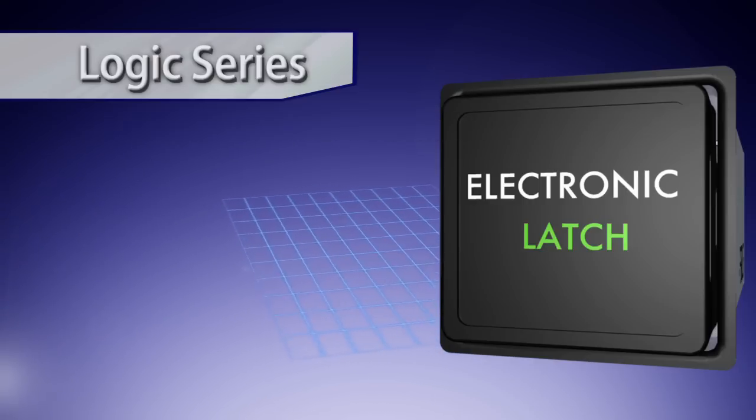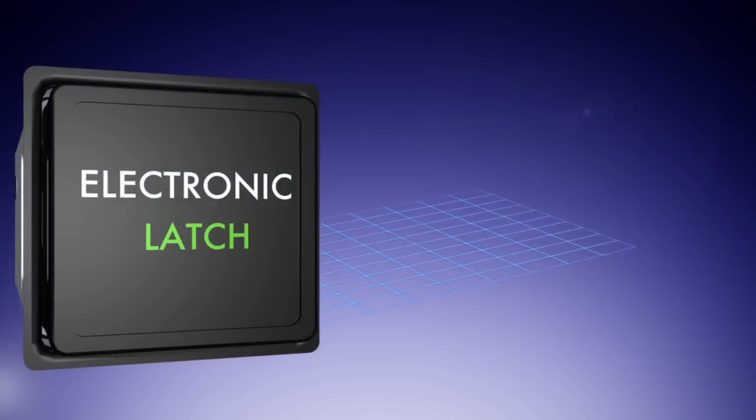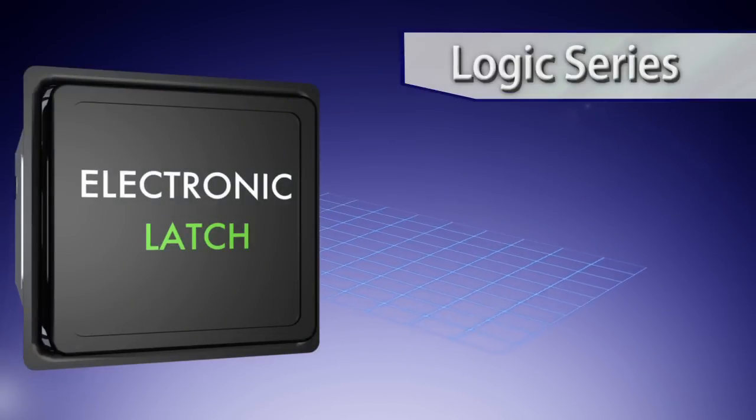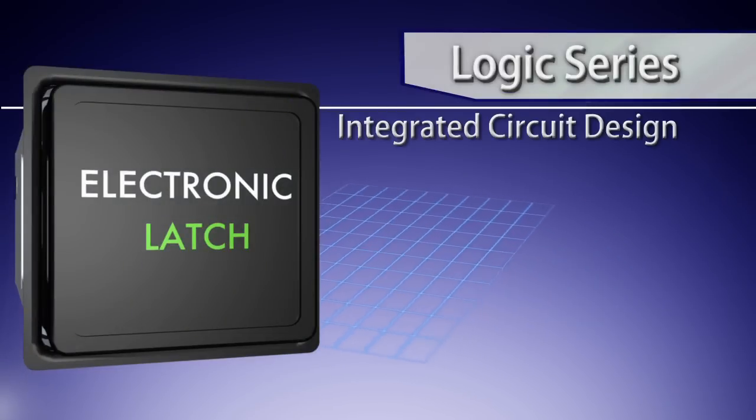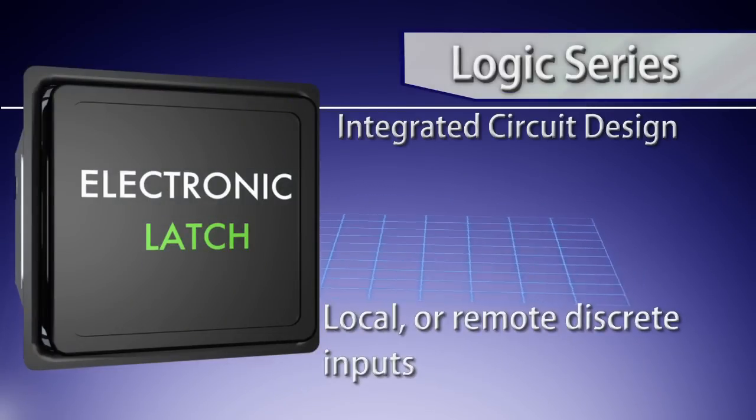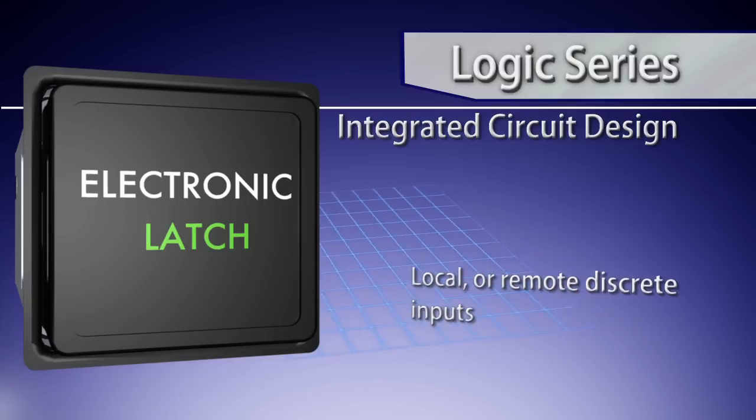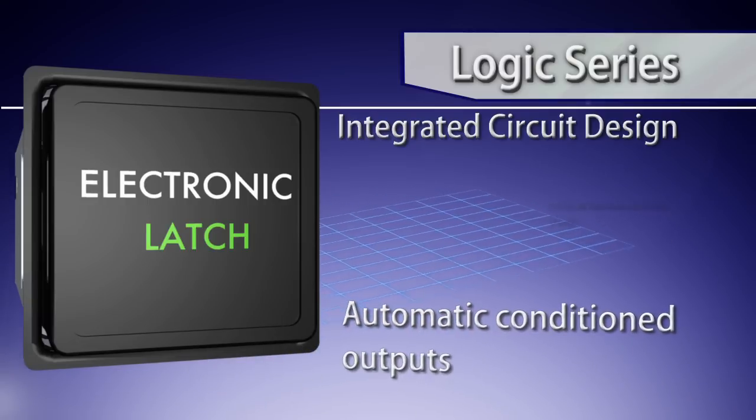The Vivisun Logic Series can be combined with two traditional 7.5-amp switch poles, plus an integrated electrical circuit, which is the electronic latch that accepts discrete inputs and responds with conditioned outputs to perform a wide range of system functions.